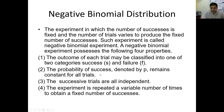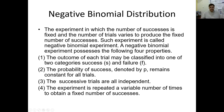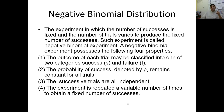The second property: the probability of success, denoted by P, remains constant for all trials. The success probability will not change, as already mentioned in the binomial distribution. The third property is also the same as the binomial distribution — the successive trials are all independent. The fourth property is a little bit different: the experiment is repeated a variable number of times to obtain a fixed number of successes.